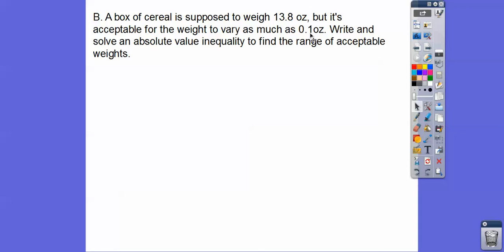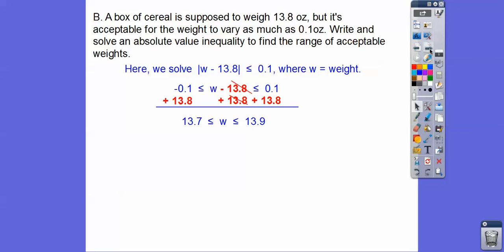This is in the tenth spot. Write and solve an absolute value inequality to find the range of acceptable weights. Here's our absolute value setup, and we will require that you put that down. Same setup: we put the inside stuff between negative 0.1 and positive 0.1, and add 13.8 to everything. So our acceptable weights are between 13.7 ounces and 13.9 ounces.